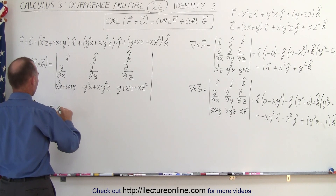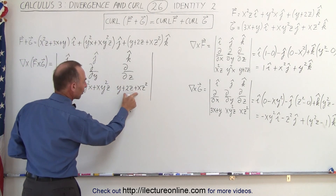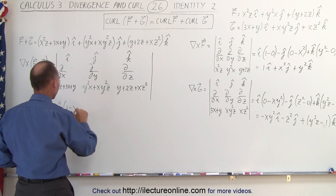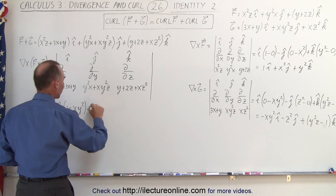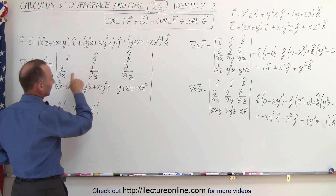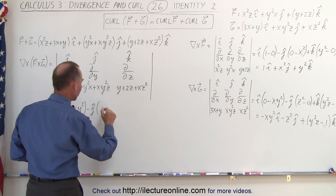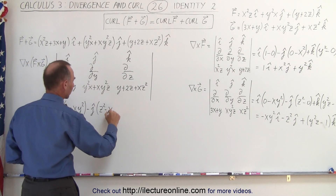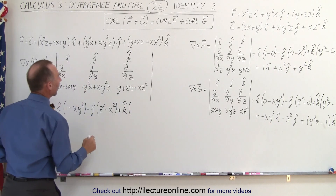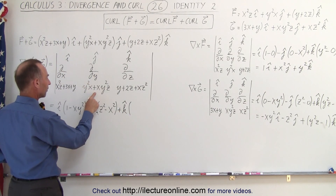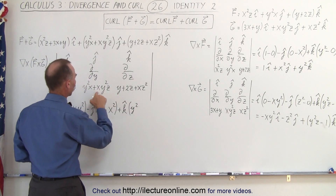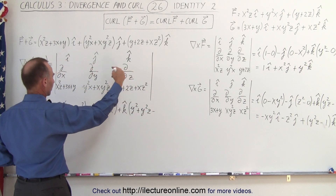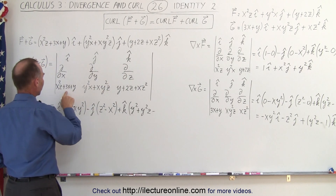The curl of the sum is equal to i times the partial with respect to y of this, which is going to be 1, minus the partial with respect to z of this, and that'll give us an xy squared. Minus j, so that would be the partial with respect to x of this component, which is z squared, minus the partial with respect to z of this, and that will give us an x squared. Plus the k component: that would be the partial with respect to x of this, that'll give us a y squared, plus y squared z, minus the partial with respect to y of this k component, and that would be a 1.